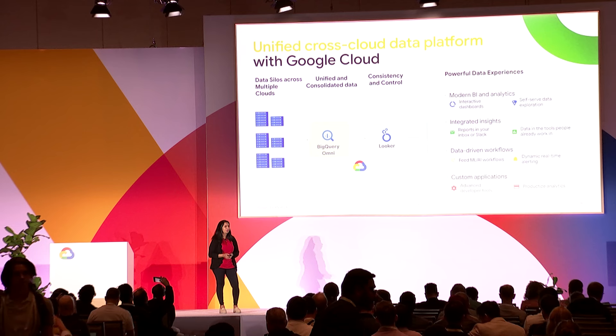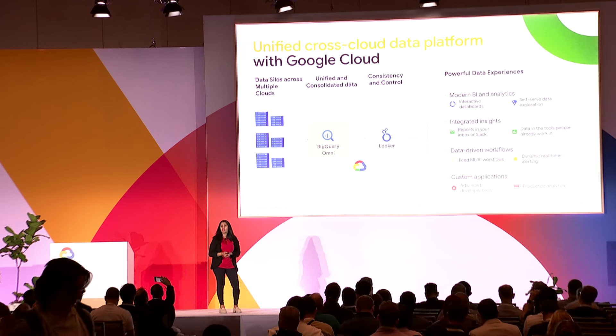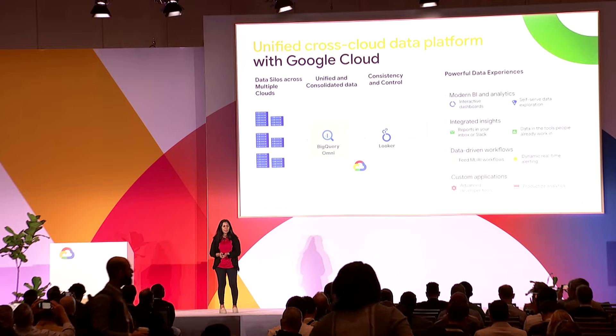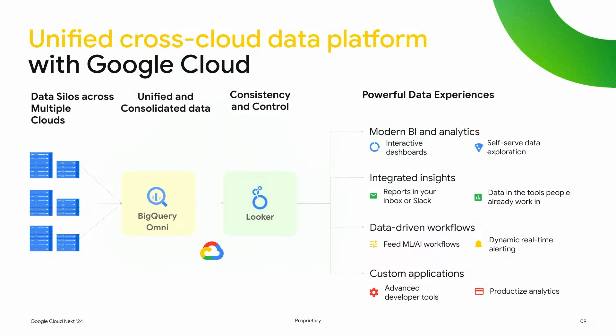At Google Cloud, we have several tools and technologies to help you manage these data silos. BigQuery Omni provides a single pane of glass to access, query, and do data transformations when data is spread across multiple clouds. With Looker on top of this consolidated data, you get a robust semantic layer and a single access point to query, visualize, and explore your datasets. With all of this integrated data, it powers several rich data experiences and BI workflows.